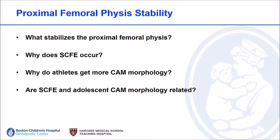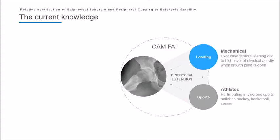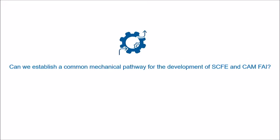What do we know about the proximal femoral physis stability? Why does SCFE occur? Why does impingement occur? They may be the same problem in a different part of the spectrum, and we're trying to understand that better. We know that mechanically in slips, often you have retroversion. There are obviously biological and mechanical factors such as high BMI that may cause the slip. Impingement is probably a distinct entity where the body is adapting to stabilize the physis by additional cupping, so it may be a physis stability problem as well. Can we develop a common mechanical paradigm to understand both phenomena as different parts of the same spectrum?